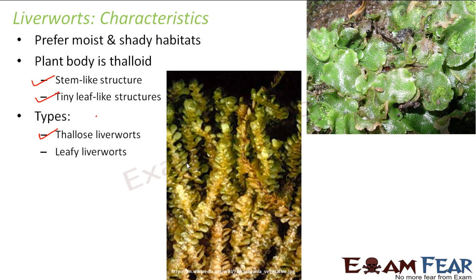The other type is leafy liverworts. Here you can actually see a stem-like structure with small leaf-like structures on it. These are known as leafy liverworts, and an example would be Scapania species. These leafy liverworts look quite similar to mosses, however there are differences between mosses and leafy liverworts. The thallus is the plant body — it is generally flattened and sometimes ribbon-like with a branching structure.